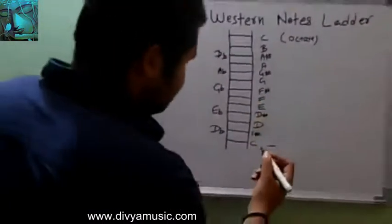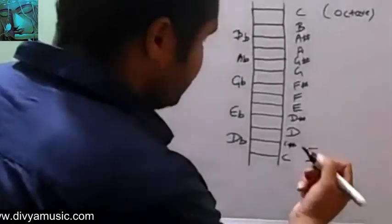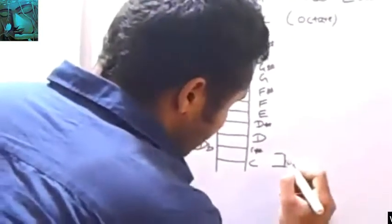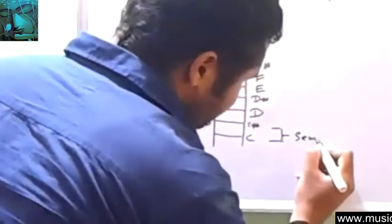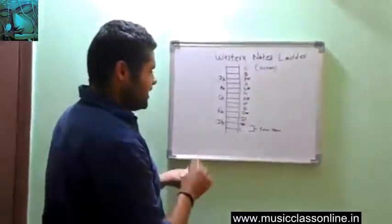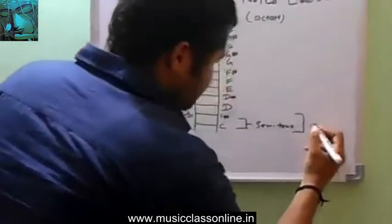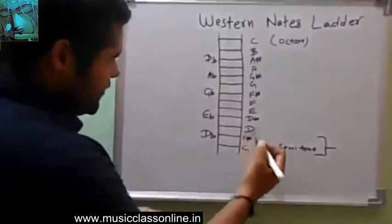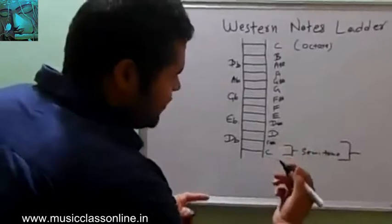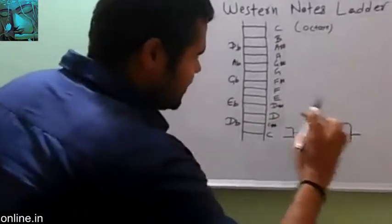This is the C sharp note, the next note. The distance between these two notes is called semitone. The distance between C and D is a full note. C to D is a full note, this is a half note called semitone, and this is a full note called tone.